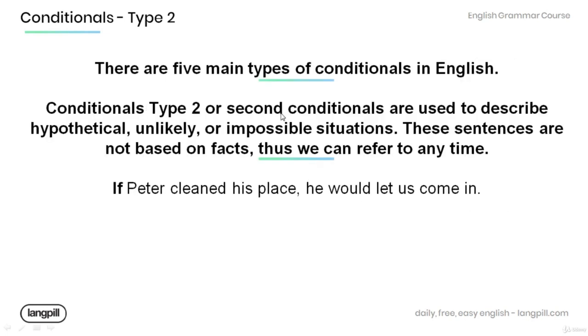There are five main types of conditionals in English, and amongst them are conditional type 2 or second conditionals. Conditionals type 2 are used to describe hypothetical, unlikely, or even impossible situations. These sentences are not based on facts, but we can refer to any time.